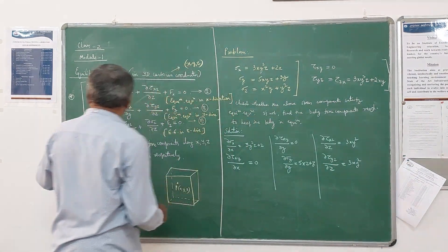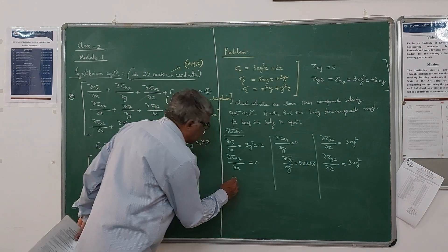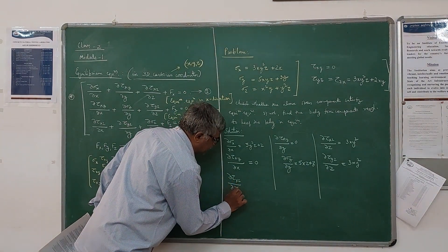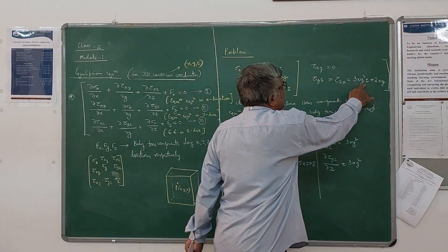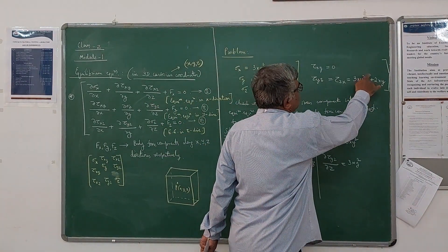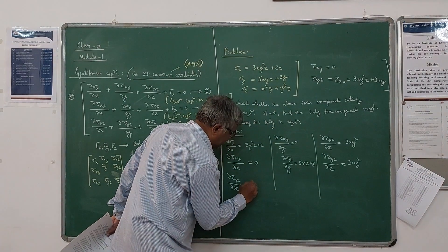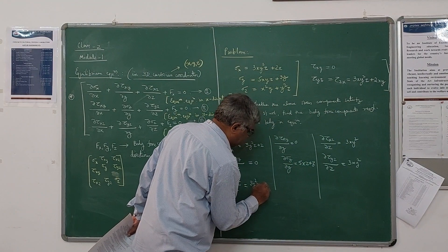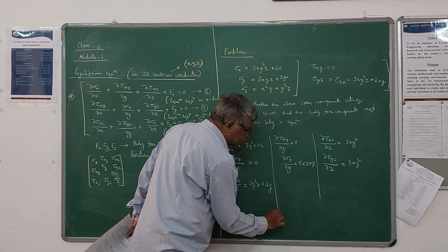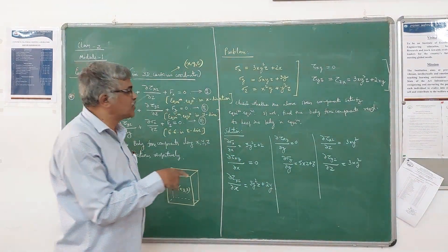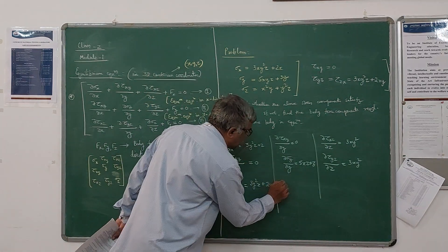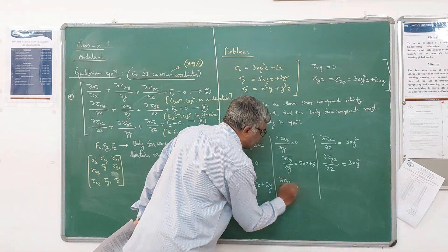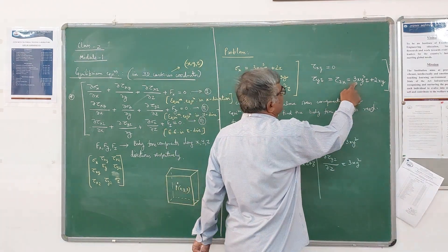Next, for the Z direction equation: ∂τ_xz/∂x — differentiating 3xy²z + 2xy with respect to X gives 3y²z + 2y. Then ∂τ_yz/∂y is computed next.